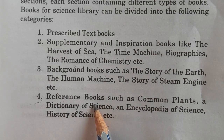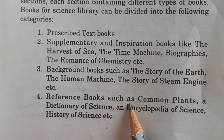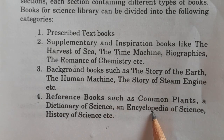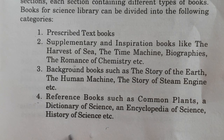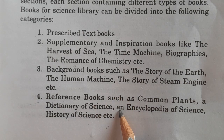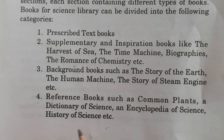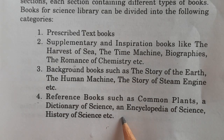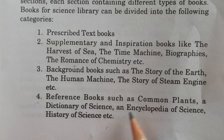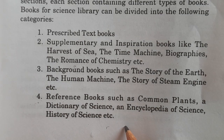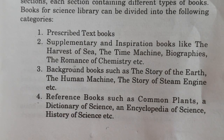Then there are reference books, such as Common Plants, A Dictionary of Science, An Encyclopedia of Science, History of Science, and scientific journals. These are books through which we can find information, look up points, and find the meanings of words. Dictionaries, encyclopedias — all of these will be part of one section categorized as reference books.